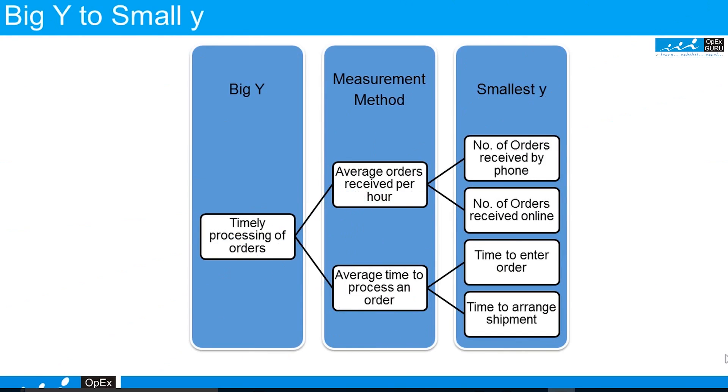Let us understand the difference between Big Y and Small Y and the relationship with CTQ critical to quality parameters. In this example, timely processing of orders is considered as Big Y. This can be affected by two things: how many orders we are receiving per hour, and the time that we take to process an order.